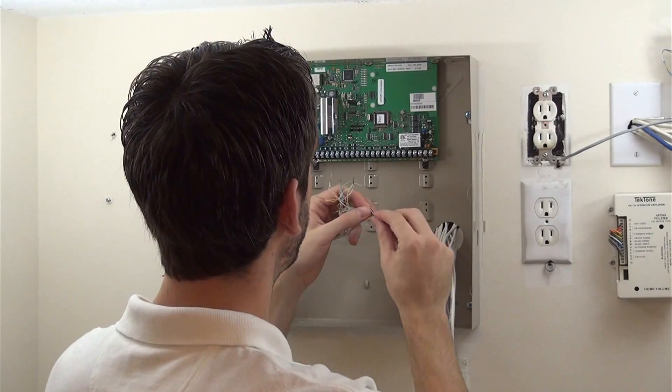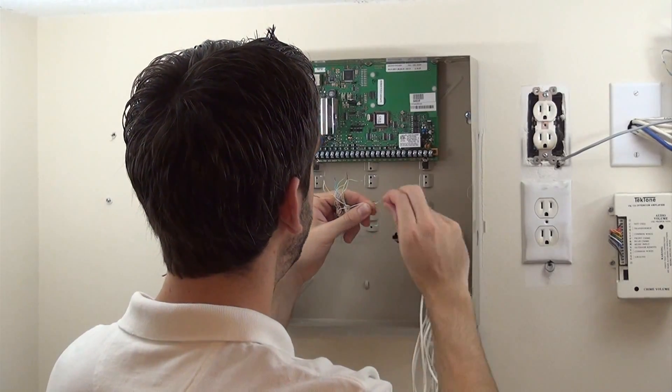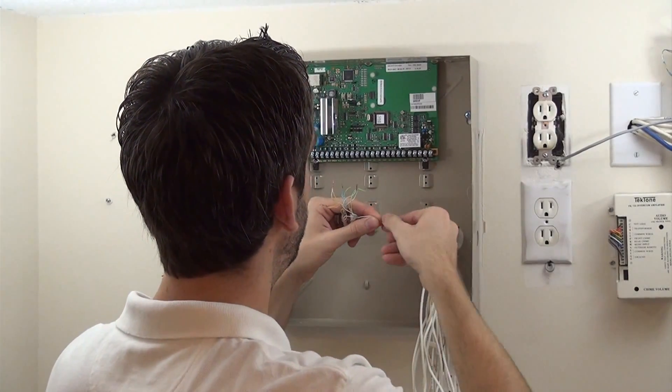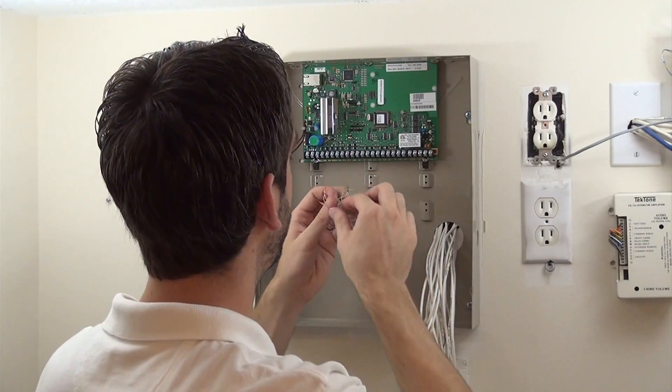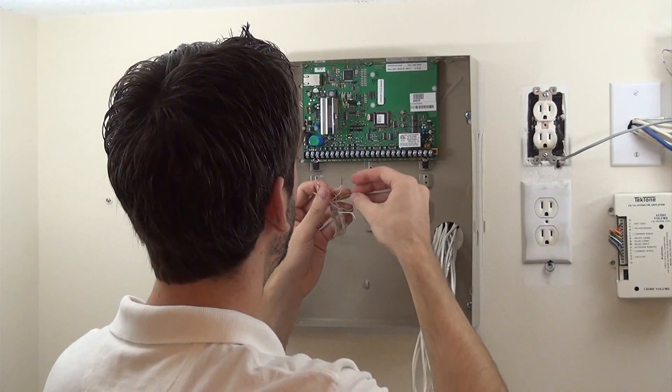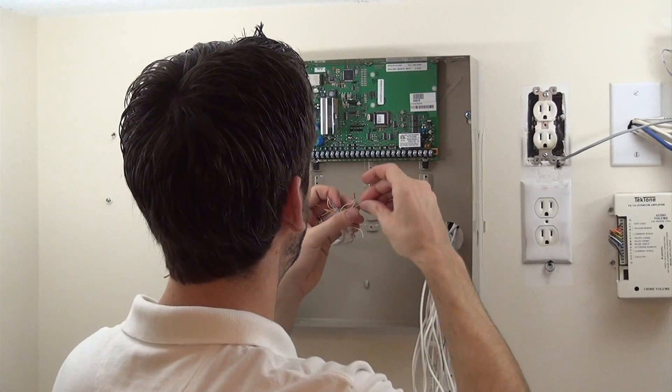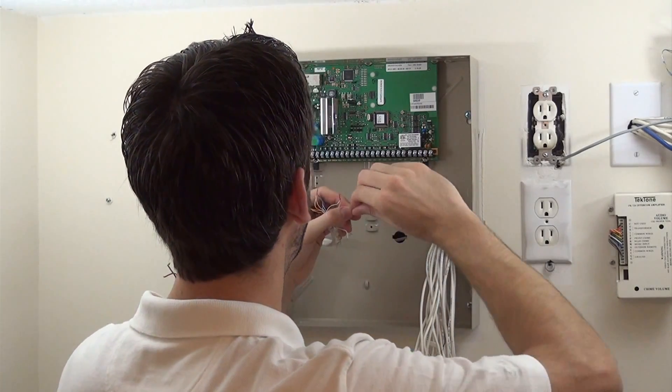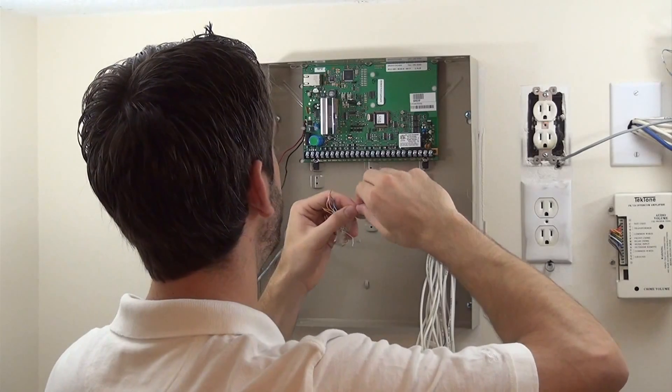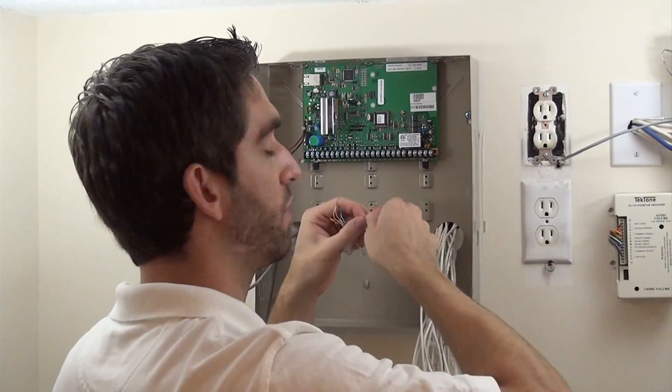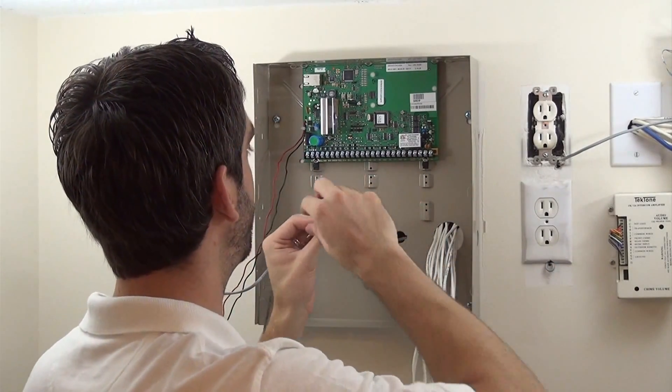So we've got our six pairs here, and we're going to want to see where these are terminated at the keypad to make sure we land them in the right spot on the board. Once we twist all our pairs, then we can land them to the ECP terminals, terminals four through seven on the Vista 21IP board.